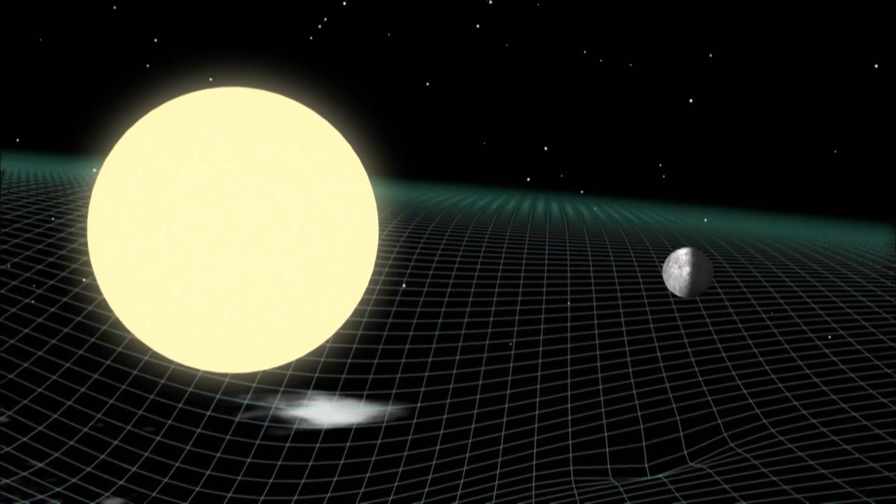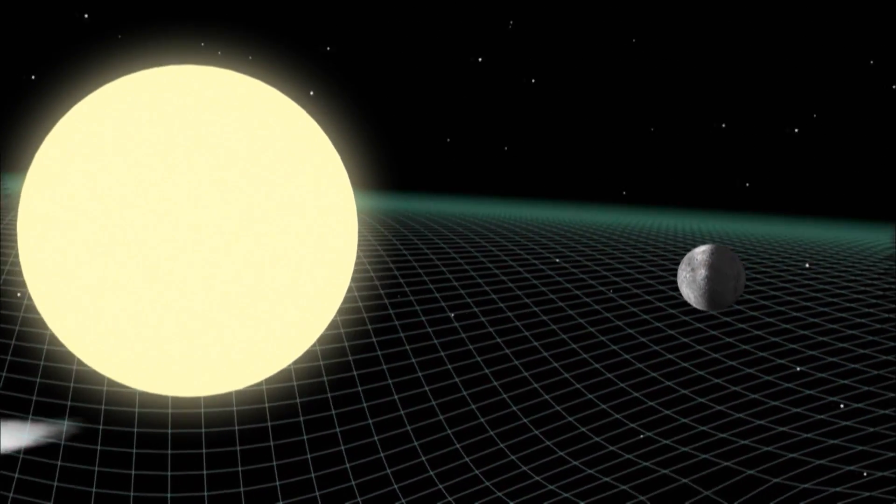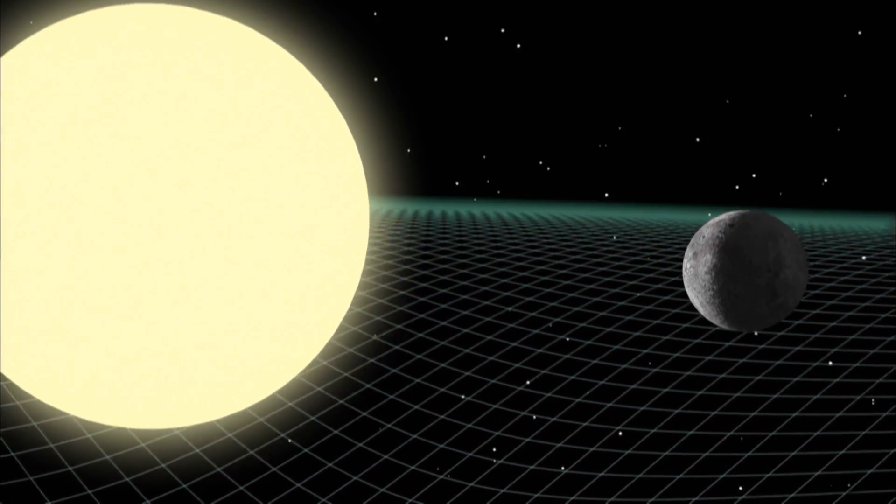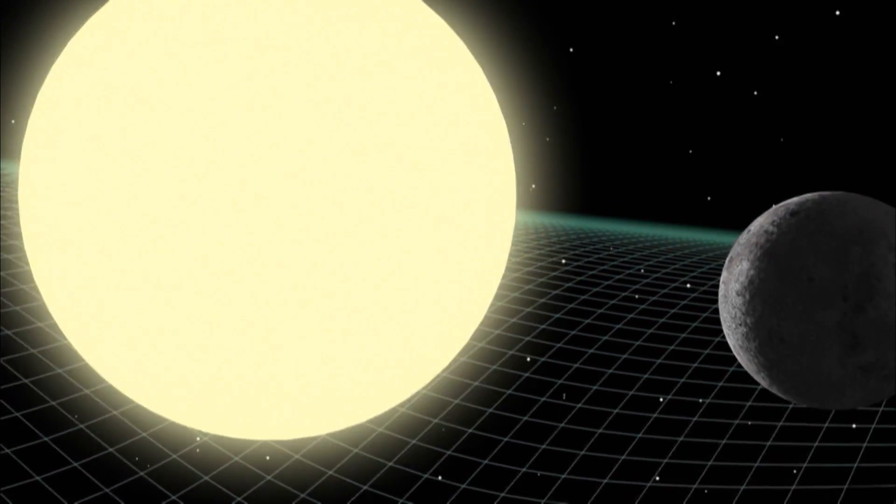A planet, for example, goes into orbit when it's caught in the warped space surrounding a star, like a ball spinning around a roulette wheel.